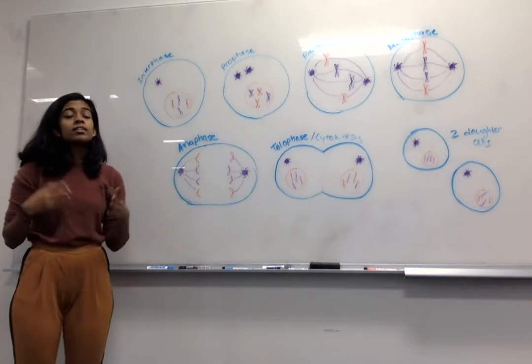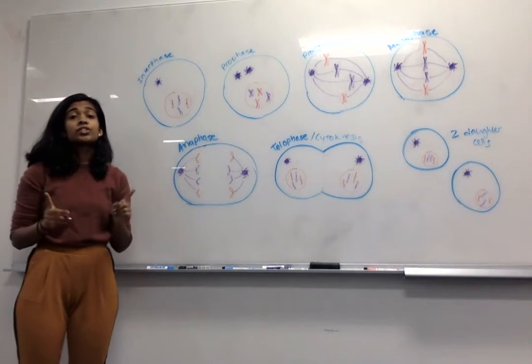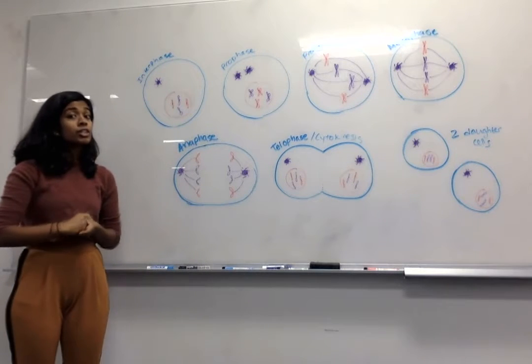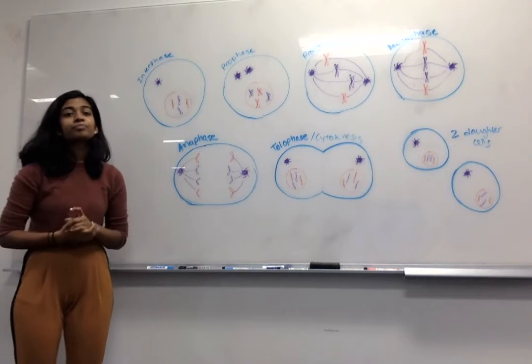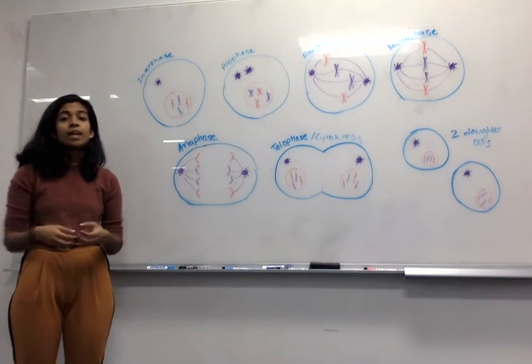By the beginning of prophase, this DNA has been copied, and the chromosomes each have two copies called sister chromatids, joined by a structure in the middle called the centromere. The goal of mitosis is to have one of each of these sister chromatids end up in each daughter cell.